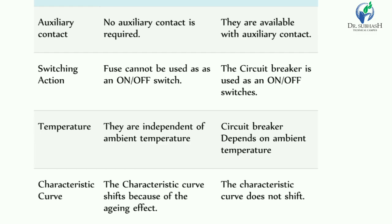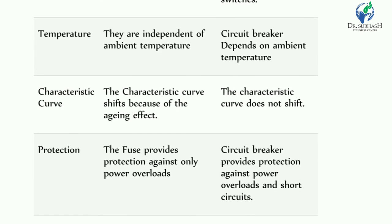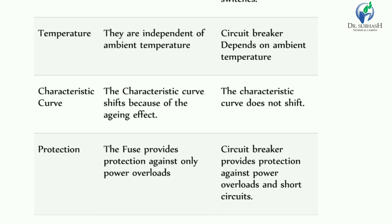The next parameter is the characteristic curve. For any electrical equipment like motors, transformers, switchgear, or electronic components like diodes, transistors, MOSFETs, or power electronics devices, the characteristic curve describes how that particular equipment or component behaves. In the case of a fuse, due to aging effects, the characteristic curve shifts, which causes nuisance tripping. In the case of a circuit breaker, the characteristic curve does not shift.